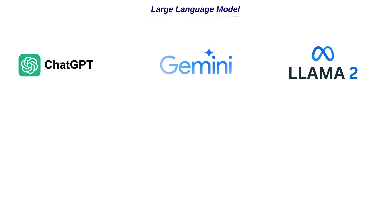A large language model, or LLM, is an AI model designed to understand and generate human-like text. Models like ChatGPT, based on GPT-3 and GPT-4, and Gemini Pro are trained on a vast amount of text data, which helps them understand patterns, relationships, and nuances in human language. Once trained, they can be used for purposes like text generation, question answering, and so on.